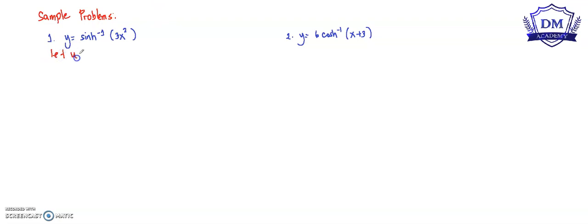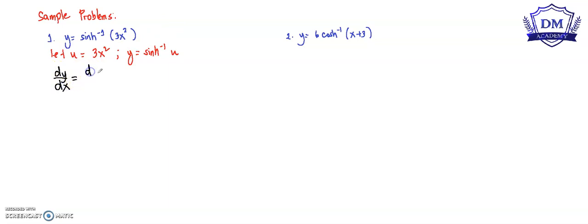Let u be equal to 3x squared. Then our function y will be the inverse hyperbolic sine of u. Using the chain rule, the derivative of y with respect to x is equal to the derivative of y with respect to u times the derivative of u with respect to x.